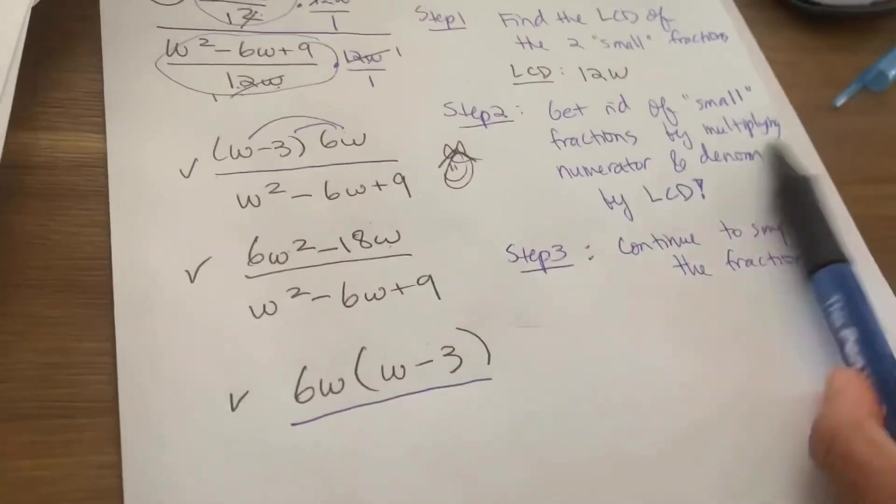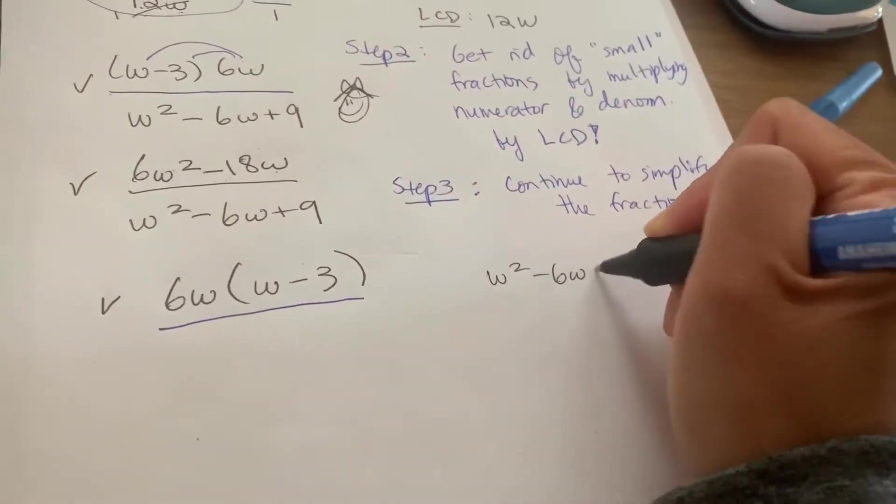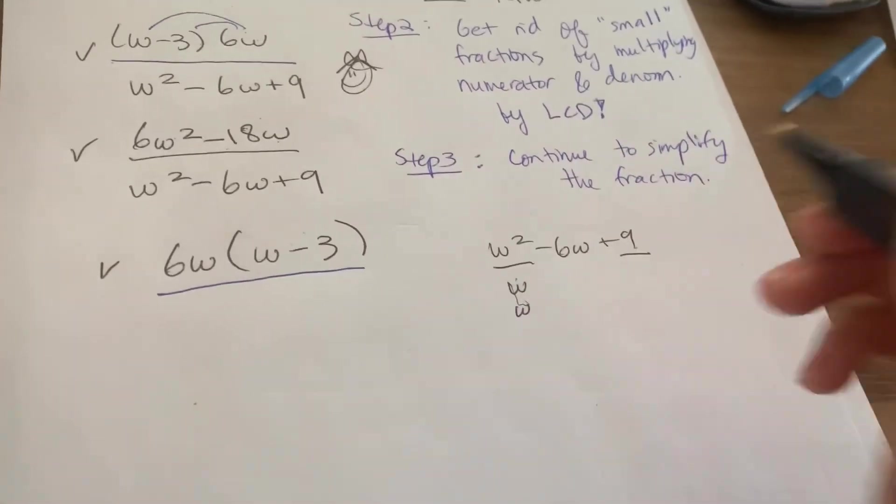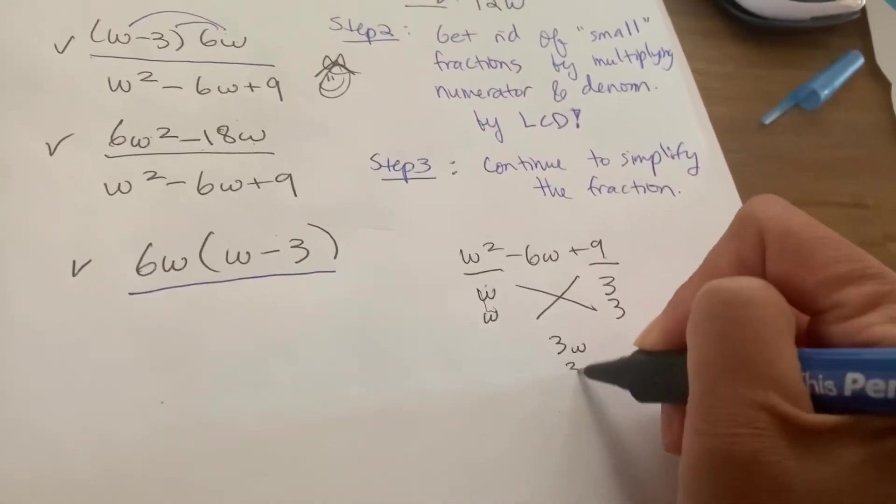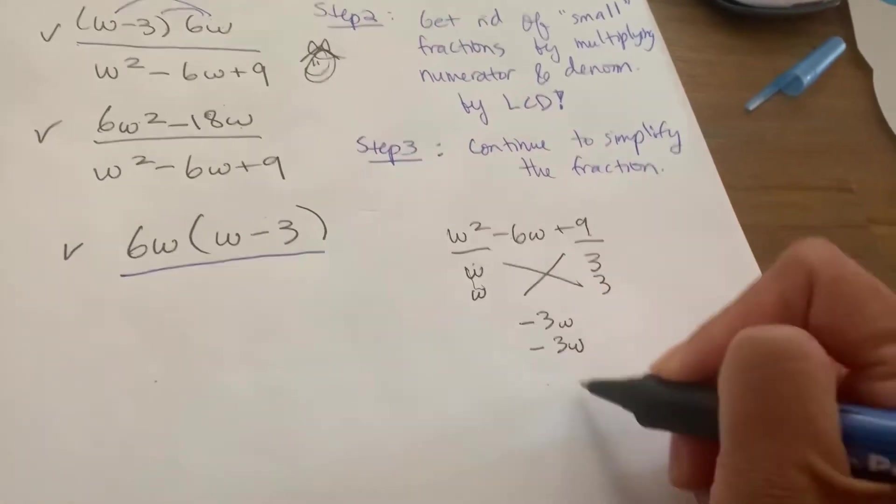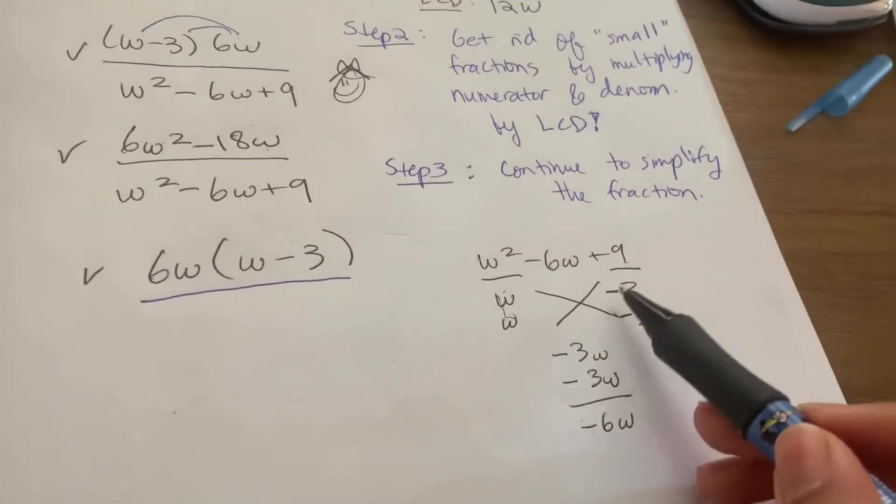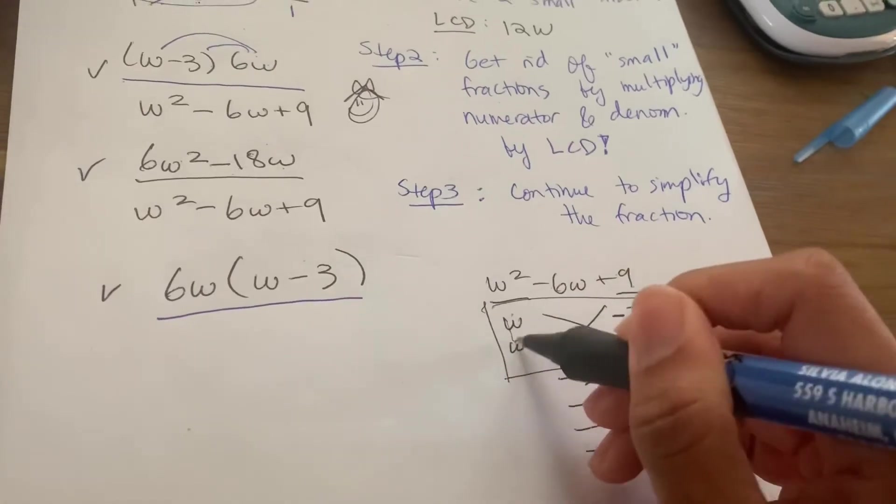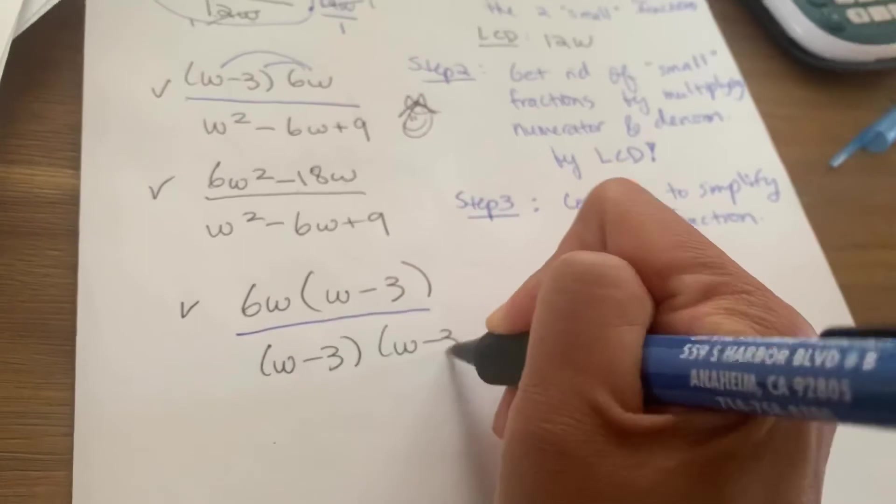And then the denominator, I'm going to try to factor the denominator using X box. So again, I'm going to do X box on the side here. Two numbers that multiply to give me W squared, W and W. Two numbers that multiply to give me 9, 3 and 3. Cross multiply, I get 3W, 3W. I want a negative 6W, so I have a negative and a negative there. Winner, winner, chicken dinner. I want a negative and a negative. And indeed, a negative 3 times a negative 3 gives me a positive 9. So therefore, these are my numbers on the bottom. W minus 3 times W minus 3.